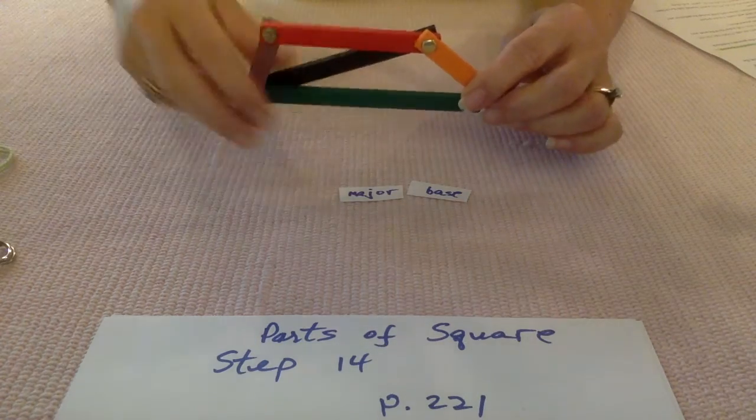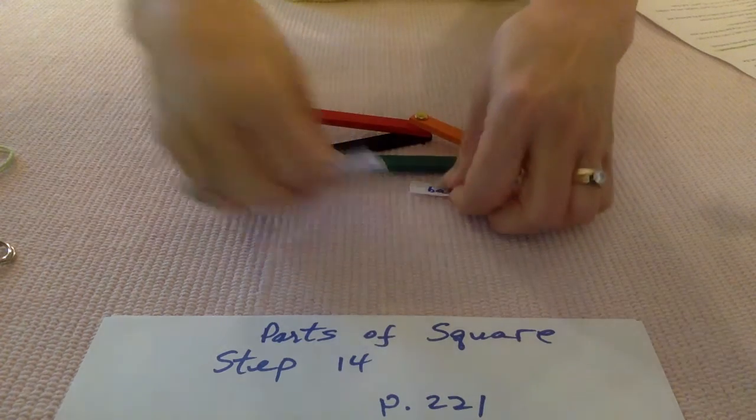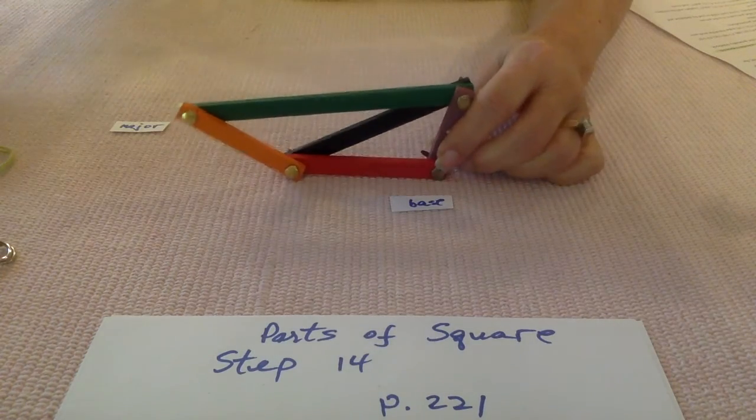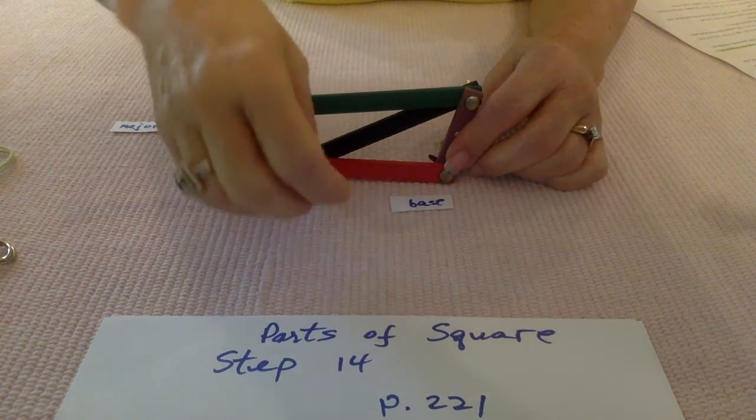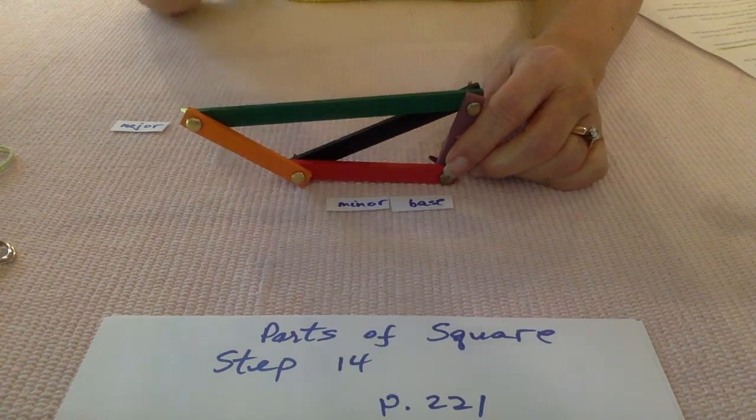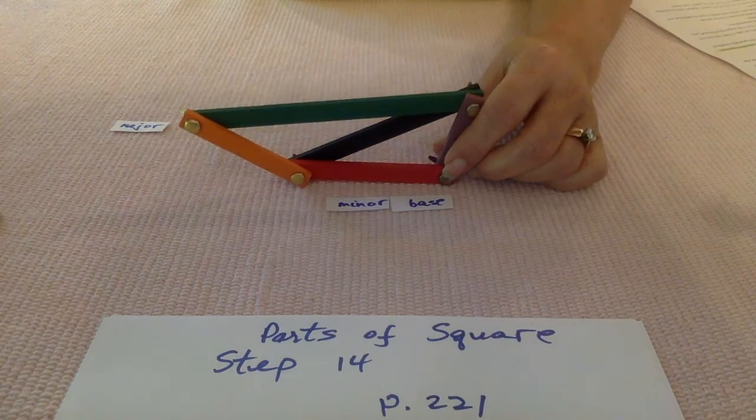However, I can turn this upside down like this. And now I say that it's resting on its minor base, being the shorter base. And now the altitudes are going to look a little different.